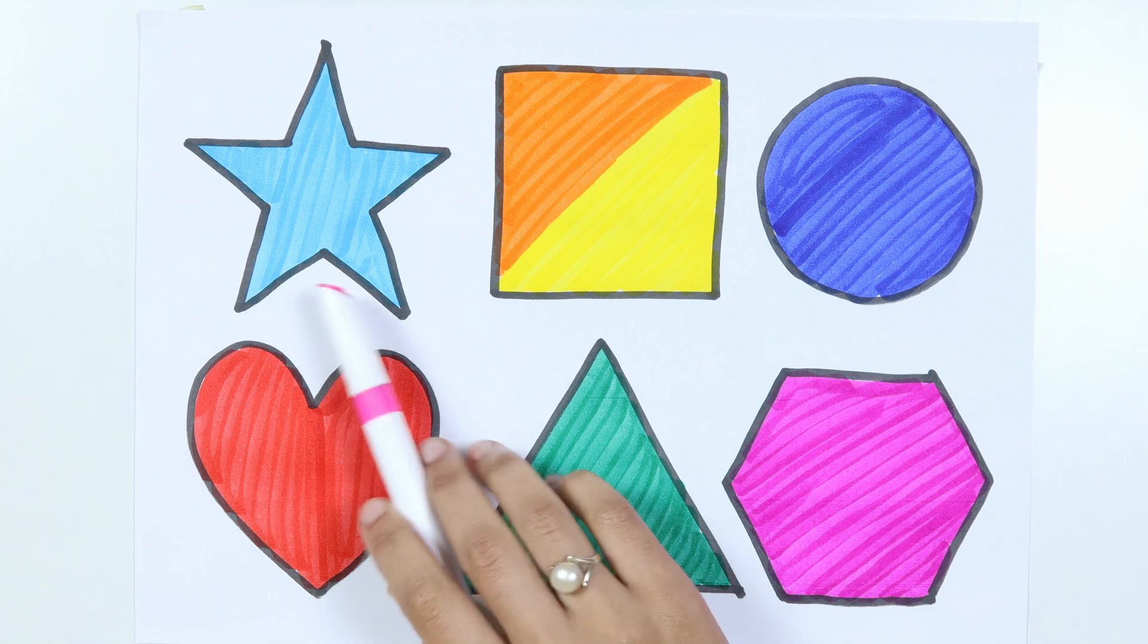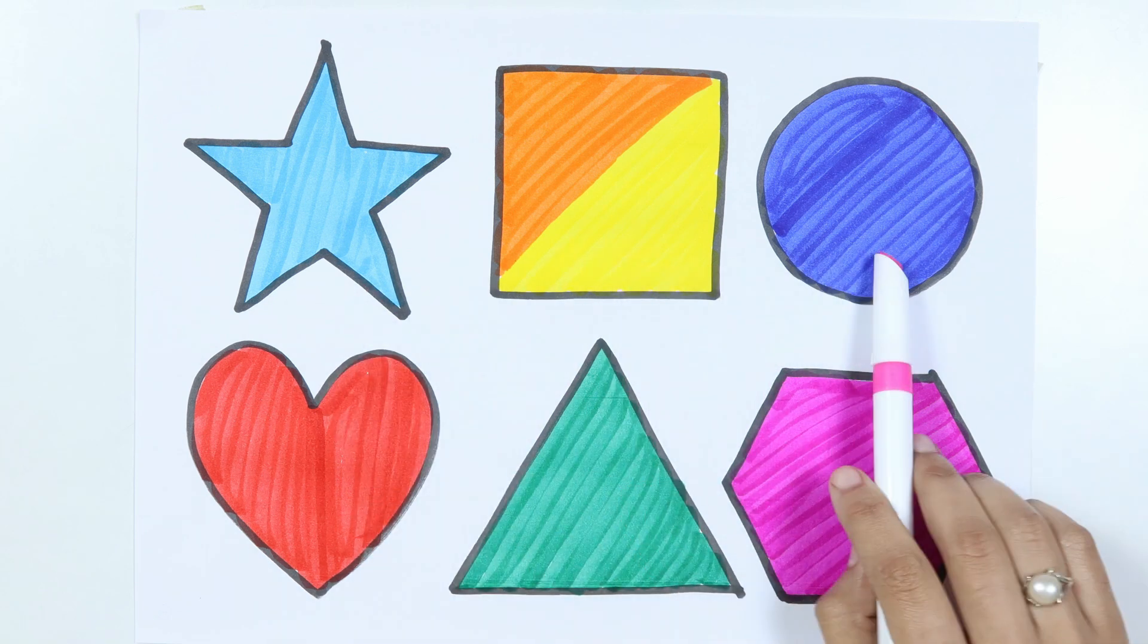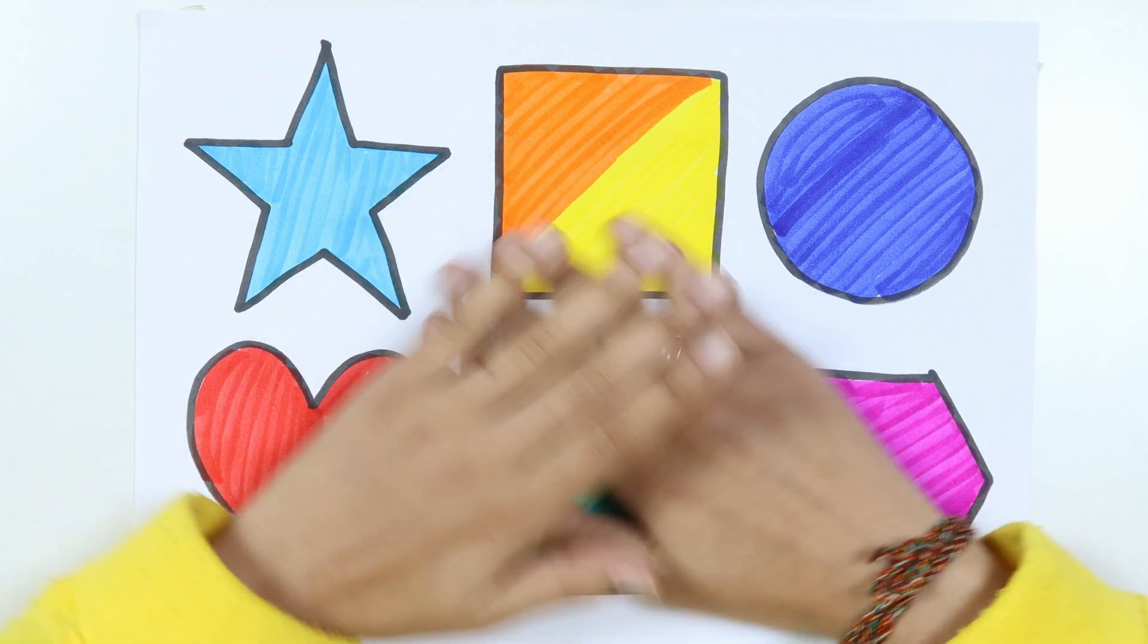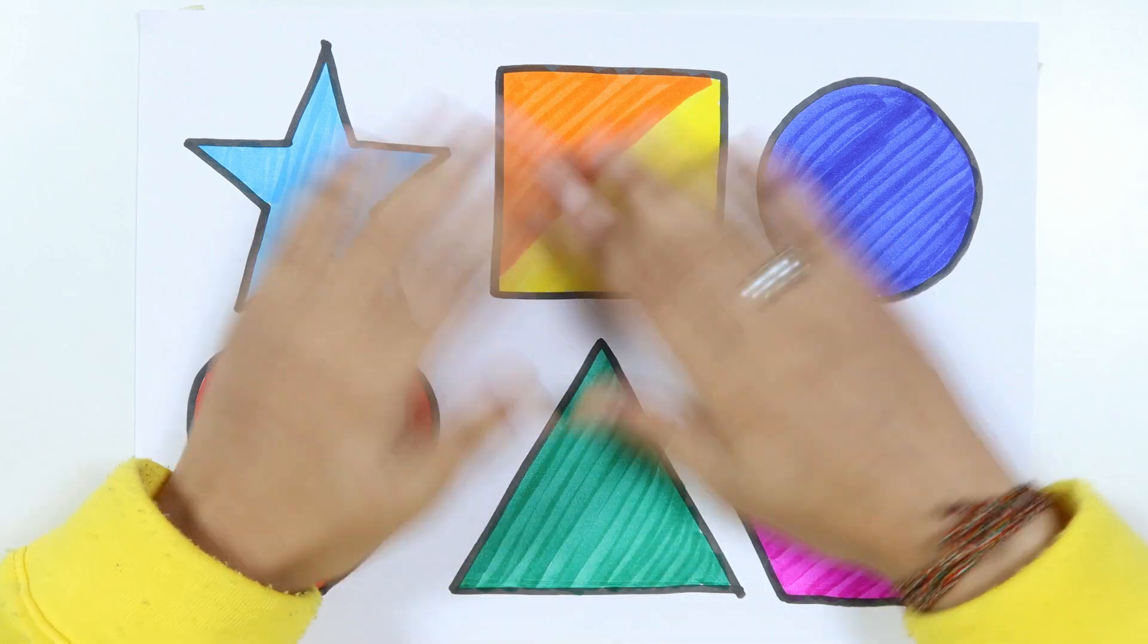Hexagon. Star, square, circle, heart, triangle, hexagon. Thank you for watching my video and don't forget to like and subscribe. Bye-bye.